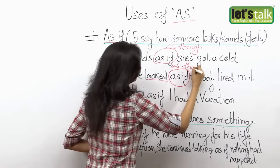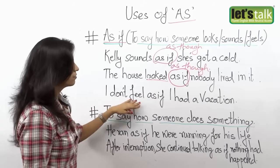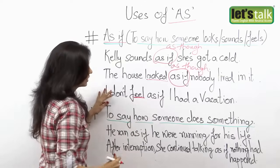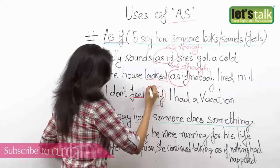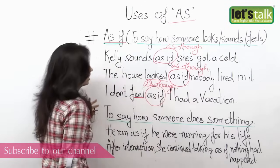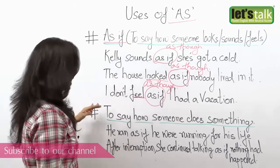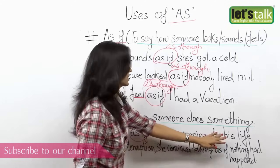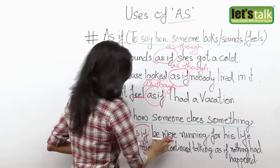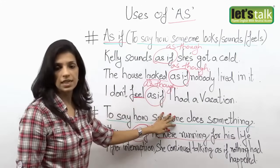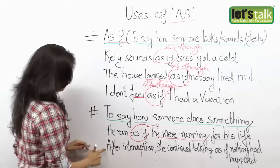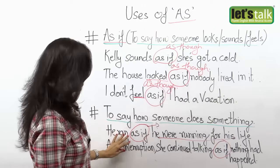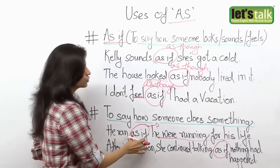Another example: 'I don't feel as if I've had a vacation.' You are describing your feeling, so you use 'as if'. We also use 'as if' when you want to say how someone does something — to describe the manner. For example: 'He ran as if he were running for his life.' Or after an interruption: 'She continued talking as if nothing had happened' — showing the manner in which she was talking.